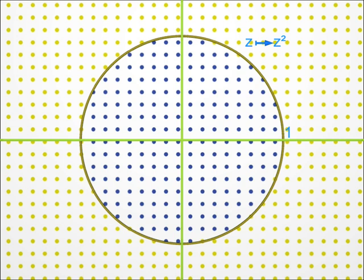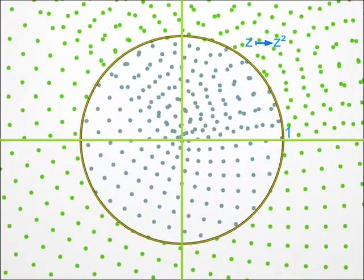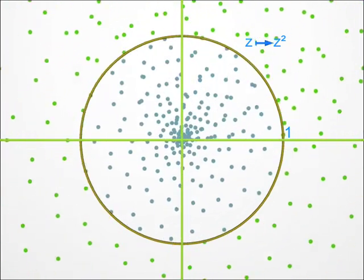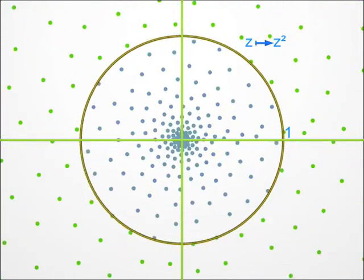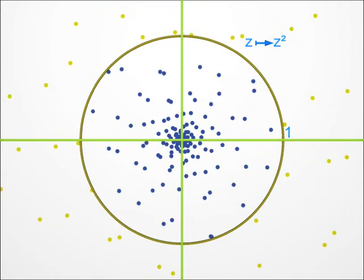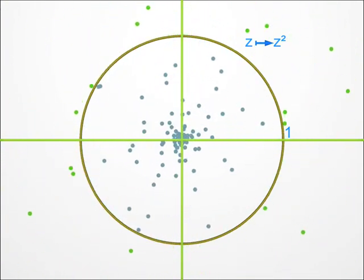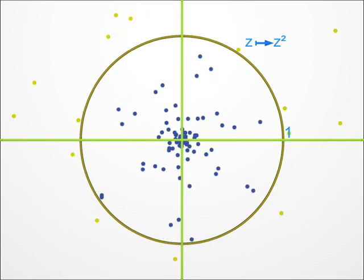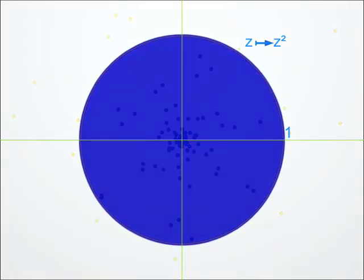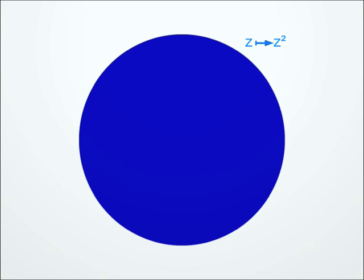Here you see a number of points. Some are blue, inside the unit disc, and some are yellow, outside. Let's perform the transformation Z squared several times, and let's look at the result. You can see that the blue points stay inside the disc. And the yellow points, on the contrary, escape from the disc and even escape from the screen. One says that the blue disc is the filled-in Julia set of the transformation Z squared. Points outside the Julia set escape to infinity when one repeats the transformation indefinitely.